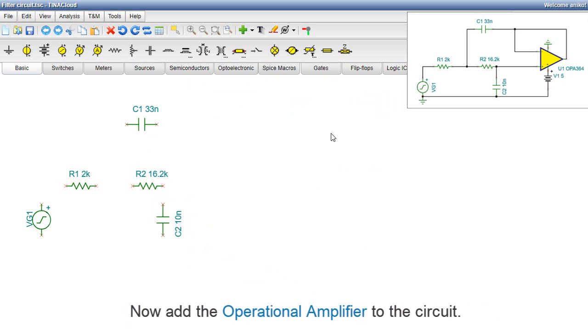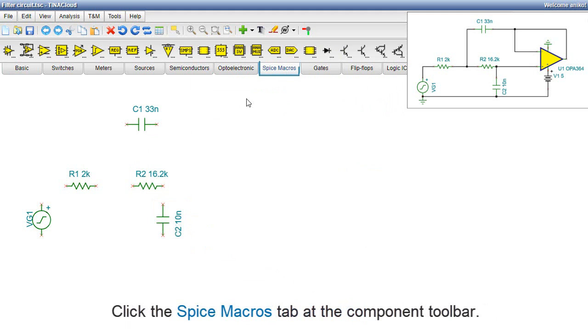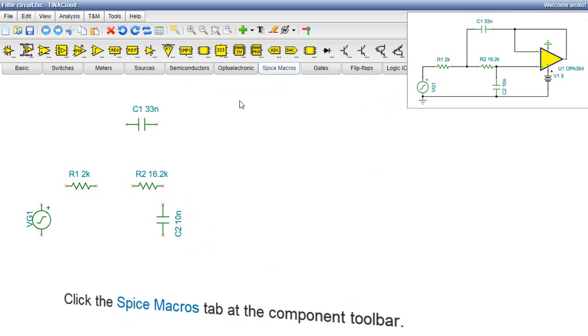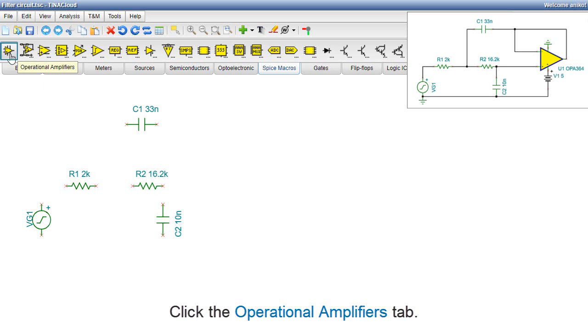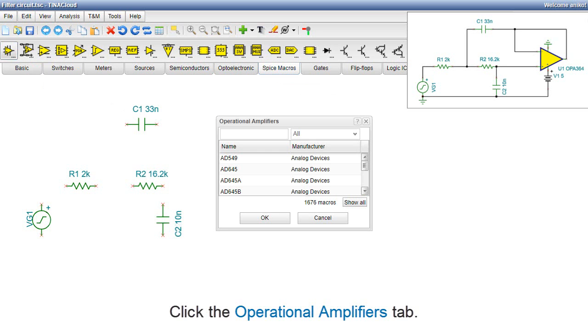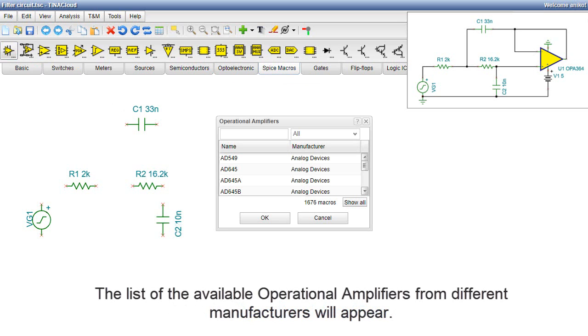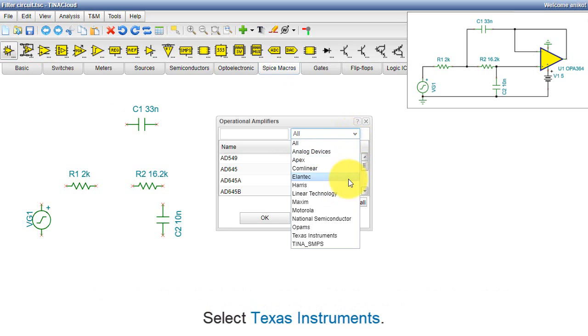Now, add the operational amplifier to the circuit. Click the SPICE macros tab at the Component Toolbar. The toolbar of the SPICE macro components will appear. Click the Operational Amplifiers tab. The list of the available operational amplifiers from different manufacturers will appear. Select Texas Instruments.